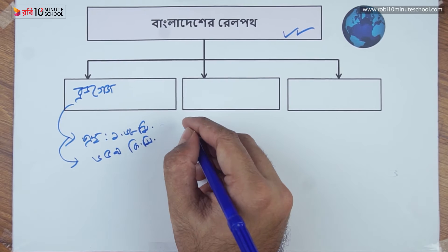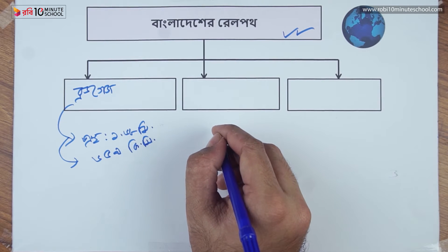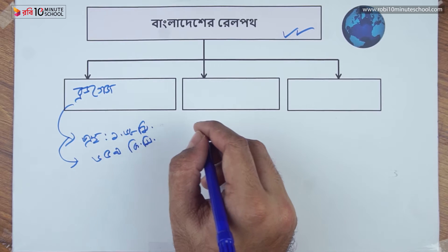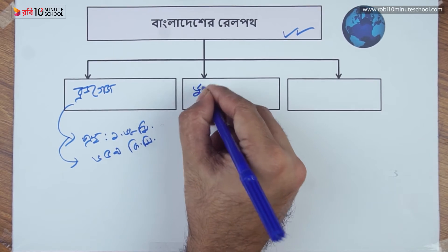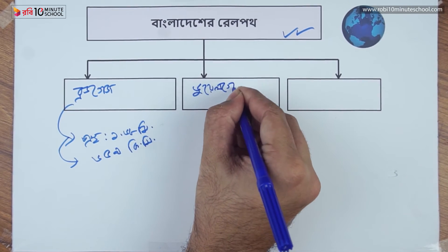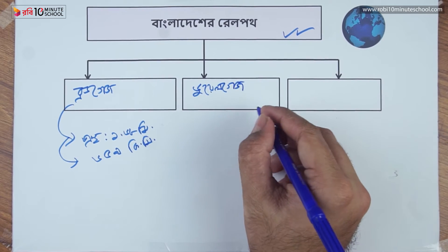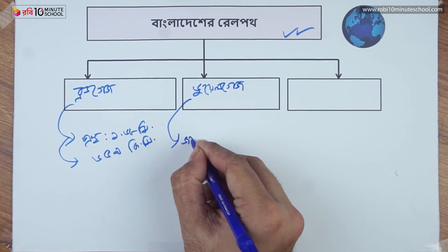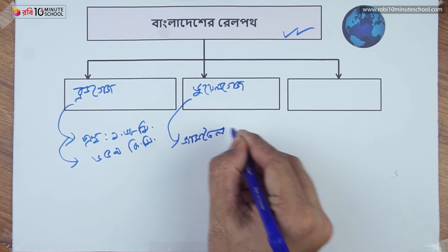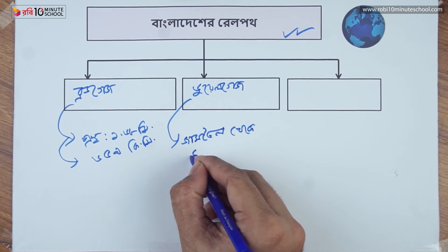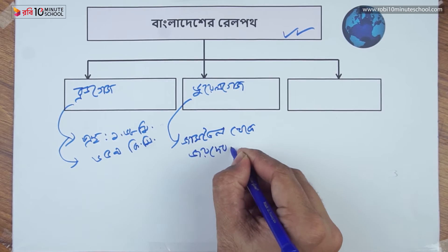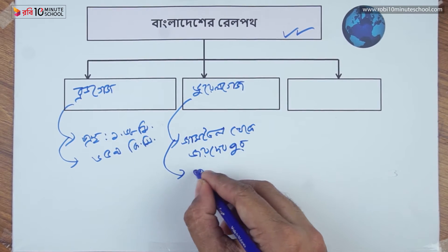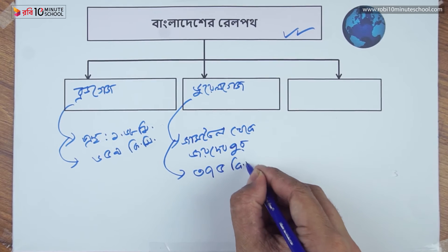This is the right path. The dual gauge rail path — the dual gauge range — covers 345 km.